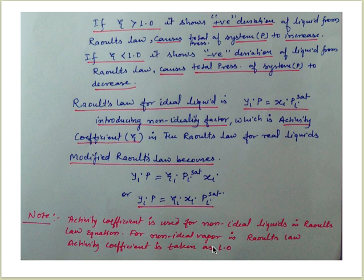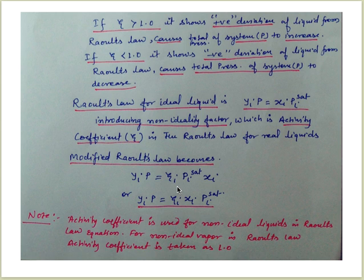When you do the calculation, you will see how the gamma value comes out — sometimes more than one, sometimes less than one. From the gamma value you can determine whether the fluid is showing positive or negative deviation from Raoult's law. You can also understand whether the vapor pressure or the total pressure of the system is going to increase or decrease. The activity coefficient is analogous to the compressibility factor Z in PV = nRT.